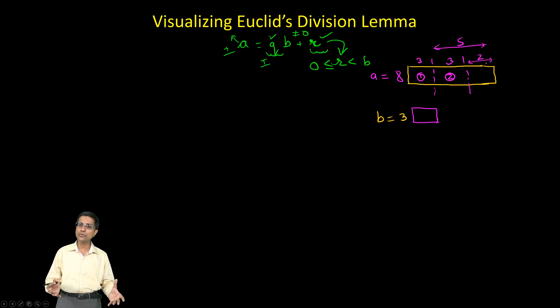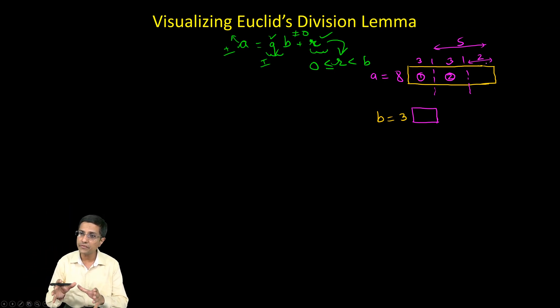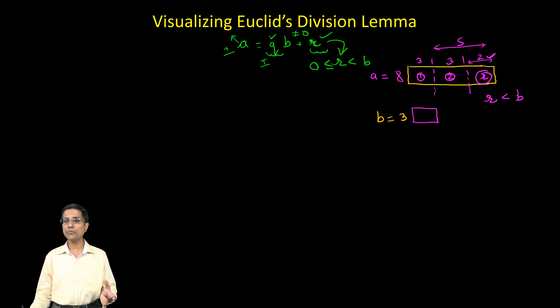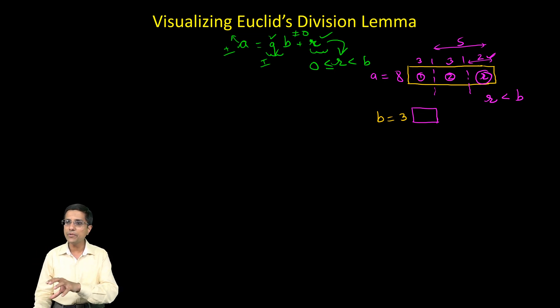Now in this 2, from this 2 I cannot take any more 3's. So the process of division stops here and because we are stopping the process of division, I cannot remove any more 3's from this 2, this remainder, this 2 has to be less than B. So from the very nature of the division process, we understand that we should be able to obtain a remainder which is less than B.